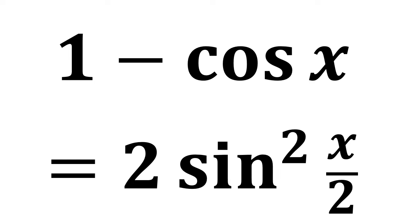In this video, we learn to verify the trigonometry identity 1 minus cosine of x is equal to 2 times square of sine of half of x.